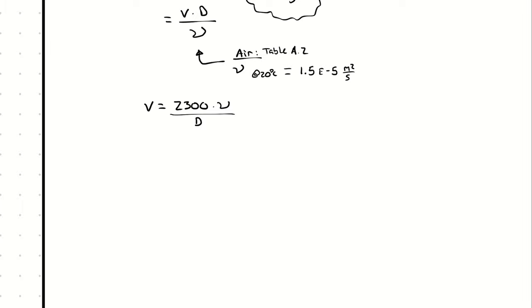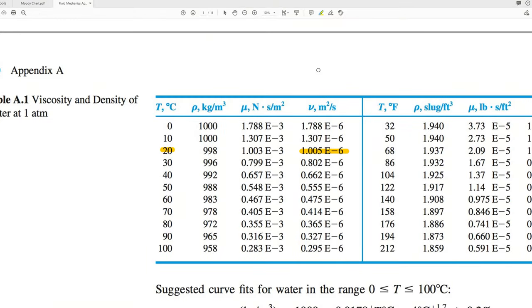So the kinematic viscosity of water at 20 degrees Celsius is 1.005 times 10 to the negative 6th meters squared per second.